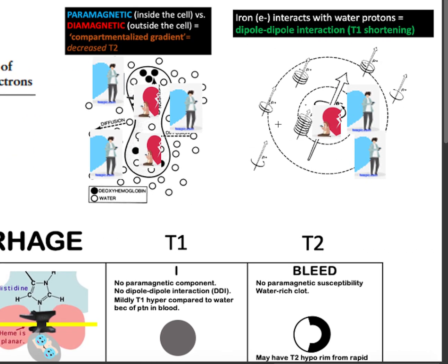Third concept: when the electron finds or interacts with the proton, there is what we call a dipole-dipole interaction, which will show us a T1 shortening or T1 bright signal. Another term for this is the electron-proton dipole-dipole interaction.